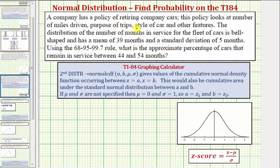A company has a policy of retiring company cars. This policy looks at the number of miles driven, purpose of trips, style of car, and other features. The distribution of the number of months in service for the fleet of cars is bell-shaped, which means we have a normal distribution. The mean is 39 months, and a standard deviation is five months.